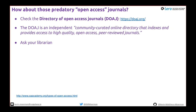People might raise concerns about predatory open access journals. Before considering any journal, you should look it up. For open access journals, there's the Directory of Open Access Journals (DOAJ), which offers a list of well-recognized and approved open access journals. At MIT you can get your open access publishing fee refunded if the journal is listed there. It's an internationally recognized, independent, community-curated directory that indexes high-quality open access journals. You can also ask your librarian.